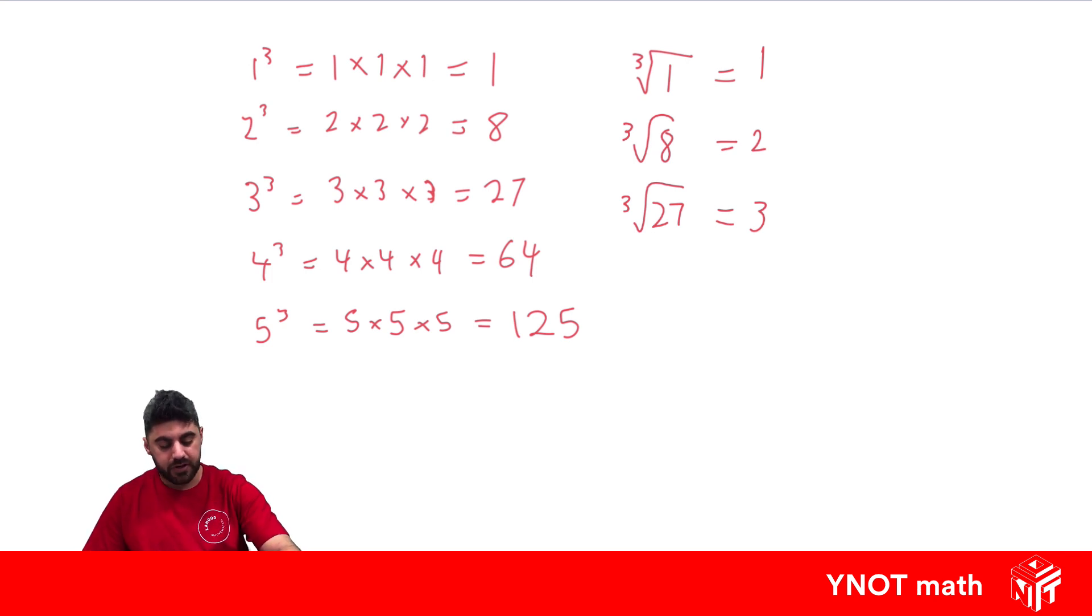And very similar, very same as square roots. Like cube root of 2 is not a nice number. It's a decimal that goes forever. Same with the cube root of 3 and the cube root of 4. Any number that's not a perfect cube is going to give us an ugly-looking decimal number if it's not one of these numbers.